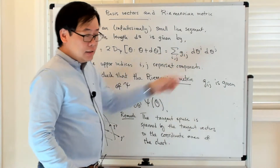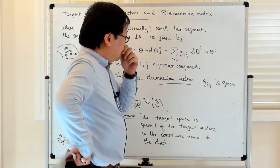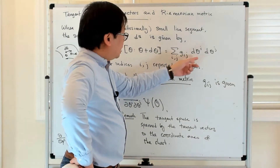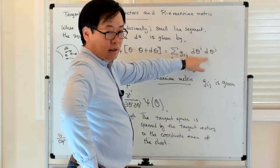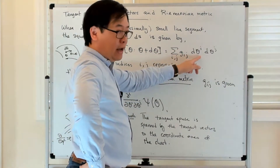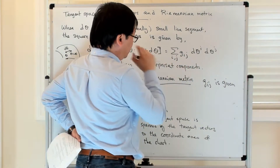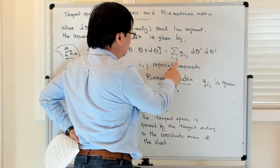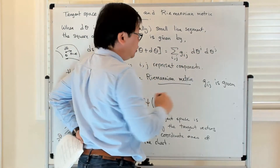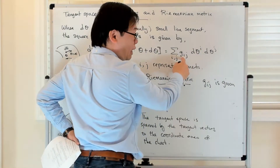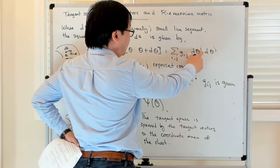Whenever you write these indices there's some notion of upper and lower indices, and that's important because of what is called the Einstein summation convention. When doing tensor analysis or Riemannian geometry, there is an implicit summation — here I've explicitly written the sum over i and j, but it's very common to omit the summation symbol when there is a repeated raised and lowered index.